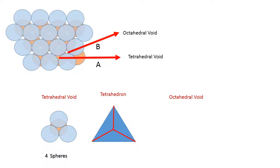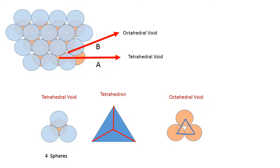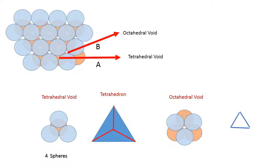Let us now focus on the octahedral void. The octahedral void consists of 3 colored spheres. I join the centers of these 3 spheres and I also observe that there are 3 blue spheres above the colored spheres, and I join the centers of the blue spheres. What I notice is that it forms an octahedron.